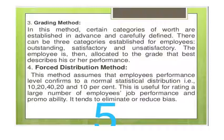Forced distribution method: This method assumes that employees' performance level conforms to a normal statistical distribution — for instance, 10, 20, 40, 20, and 10 percent. This is useful for rating a large number of employees, job performance, and promotability. It tends to eliminate or reduce bias.